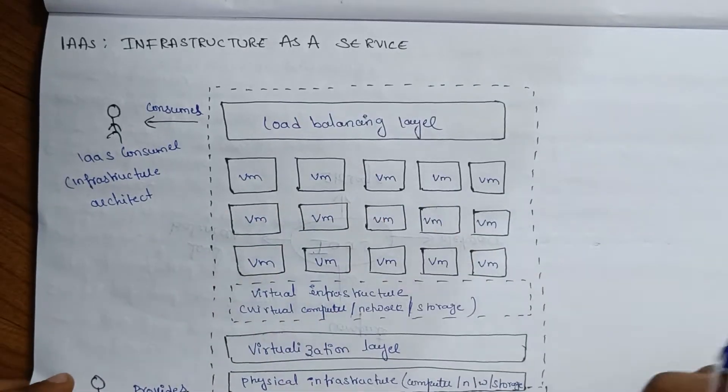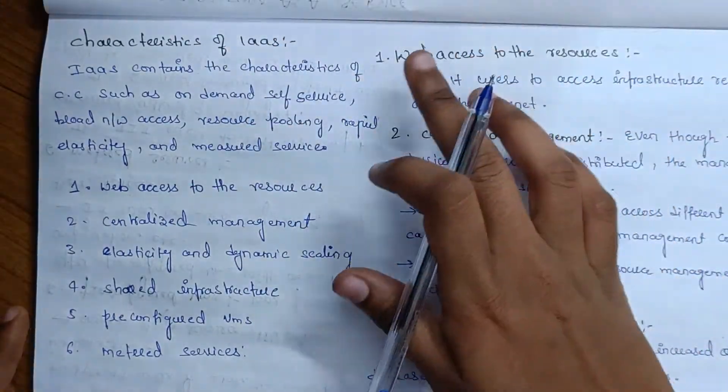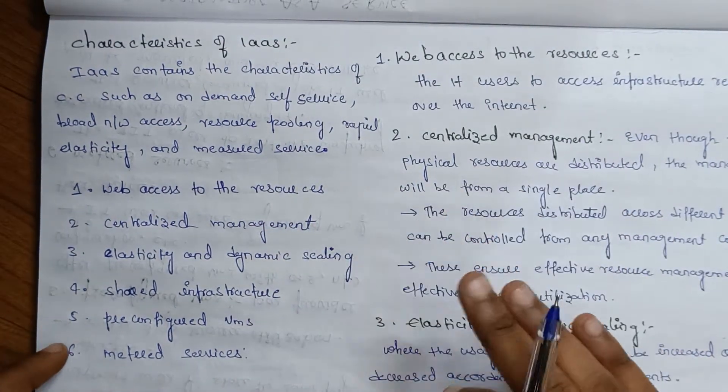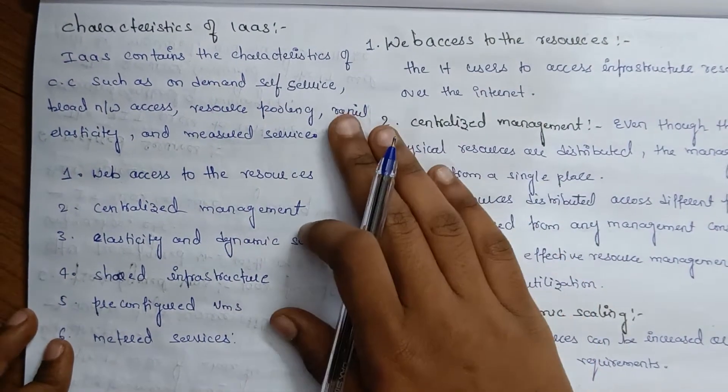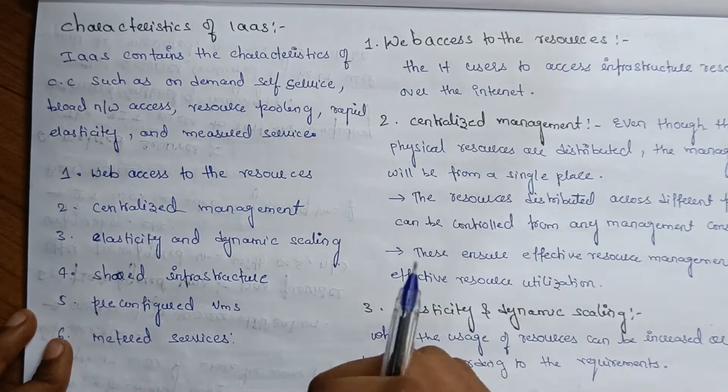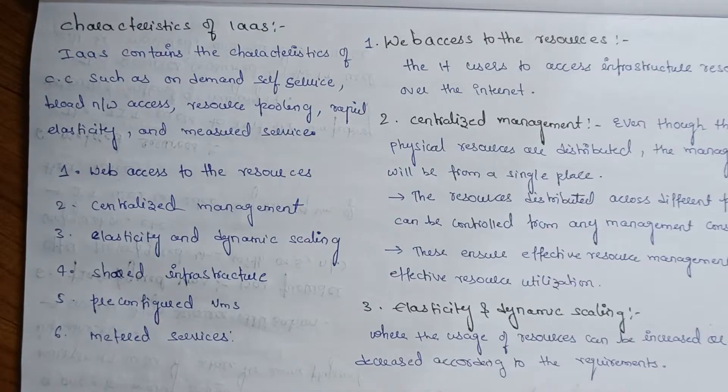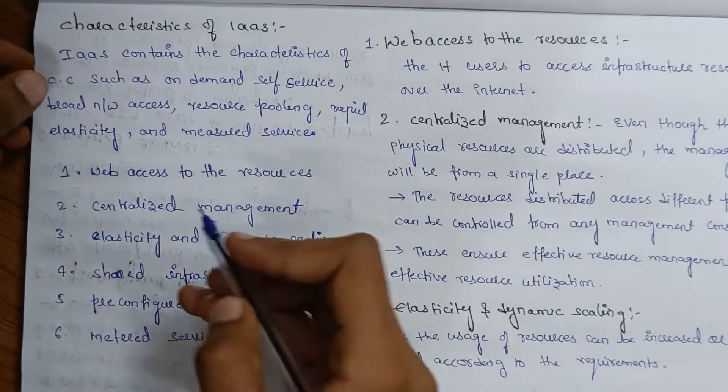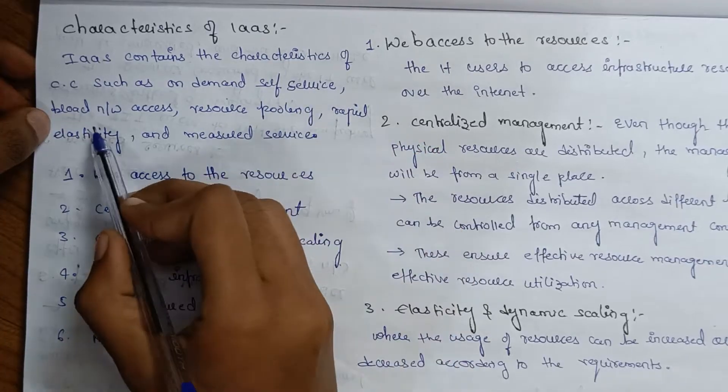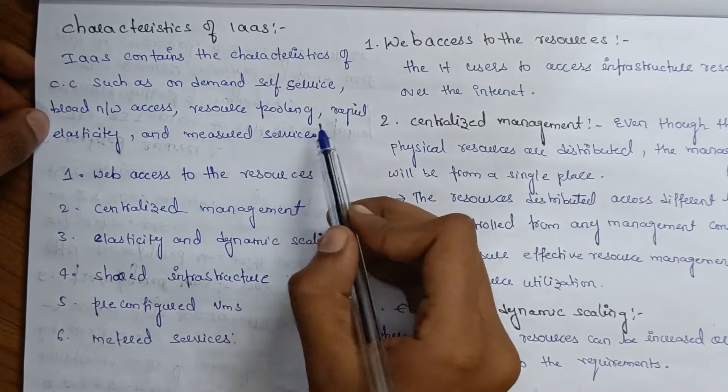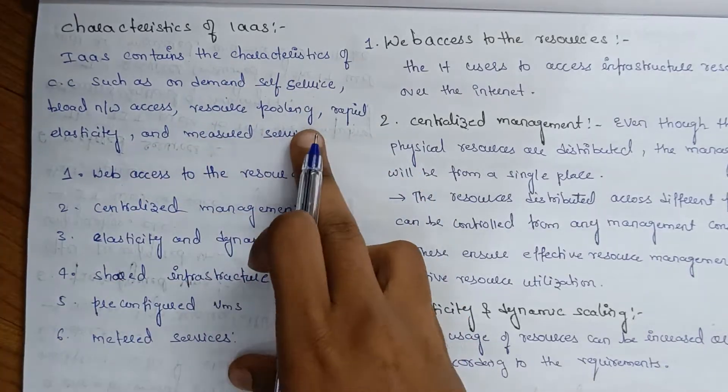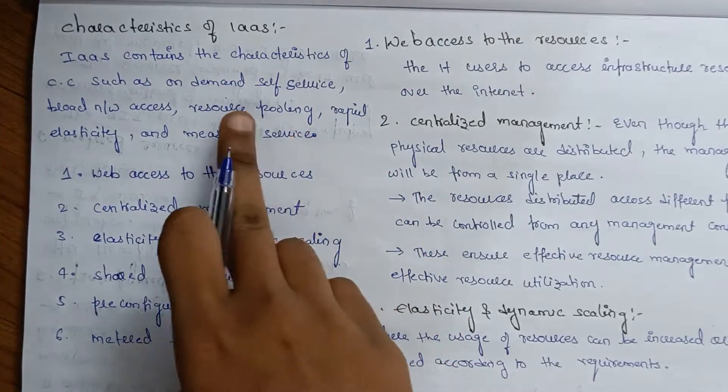These are the services provided by IaaS. Now we will discuss the characteristics of IaaS. Infrastructure as a Service contains the characteristics of cloud computing such as on-demand self-service, broad network access, resource pooling, rapid elasticity, and measured services. These are the essential characteristics.